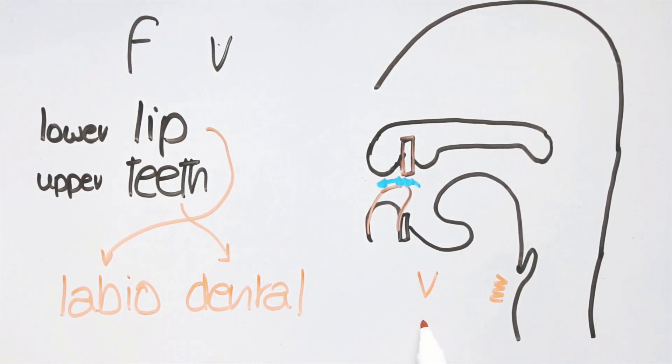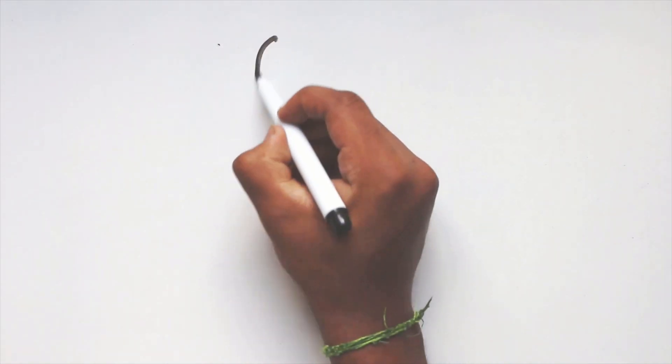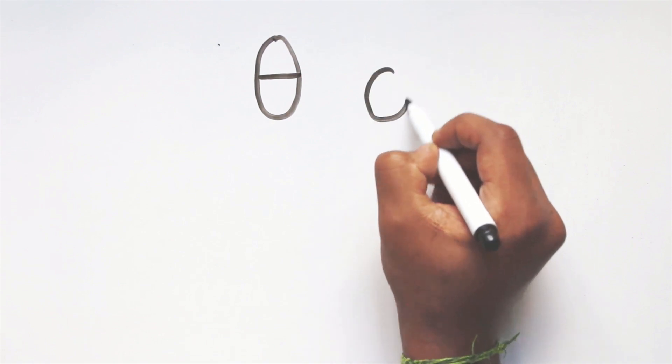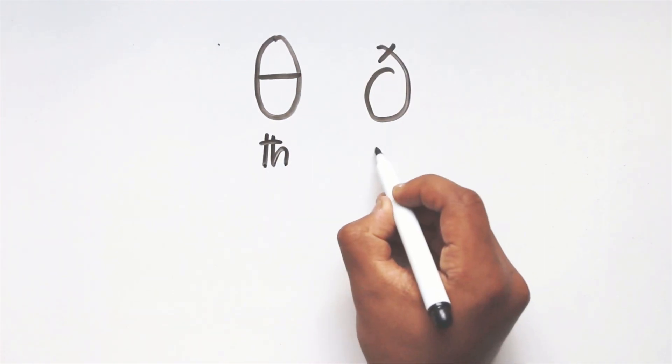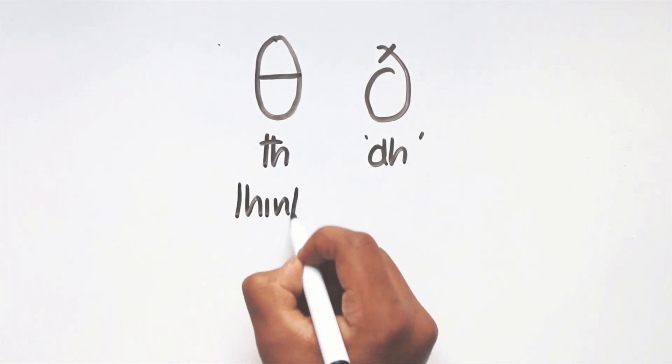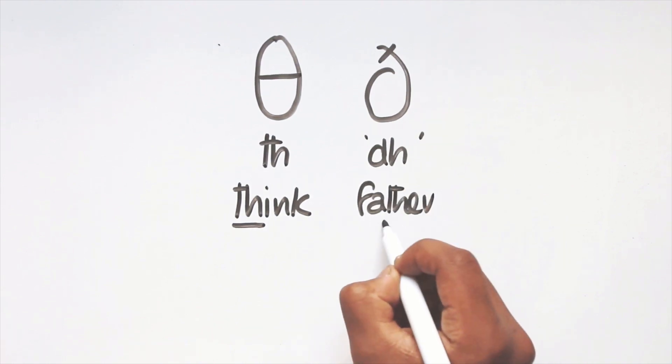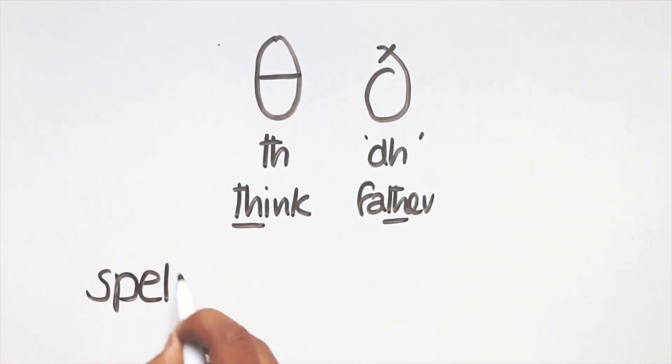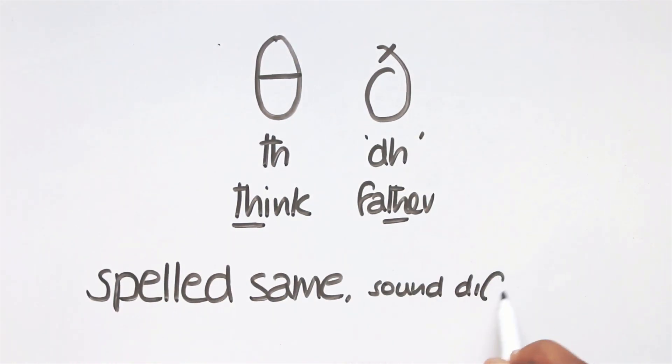Of course, v is voiced and f is voiceless. Next, take a look at these weird letters. All they represent are th and th, which you find in the words thing and father. They are different sounds with a difference in voicing, just spelt the same.